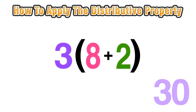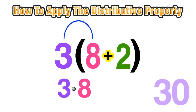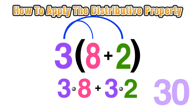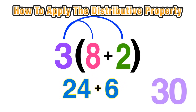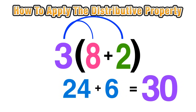Let's return to 3 being multiplied by the sum of 8 and 2. Here's how distributing works: we take the value outside the parentheses — in this case 3 — and first multiply it by the first term, giving us 3 times 8. Then we keep the plus sign and distribute that 3 to the second item, 3 times 2. We know 3 times 8 equals 24, and 3 times 2 equals 6. Adding 24 plus 6 equals 30 — the same answer we got before.